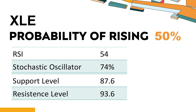XLE's short-term support level is 88.7. If it falls below this level during the session, it will have a chance to test 87.6. XLE's short-term resistance level is 92.7. If it breaks through this level during the session, it will look up to 93.6.